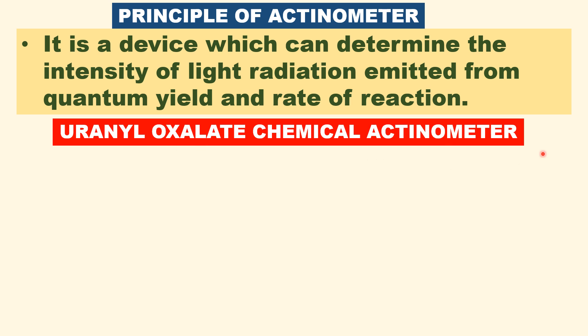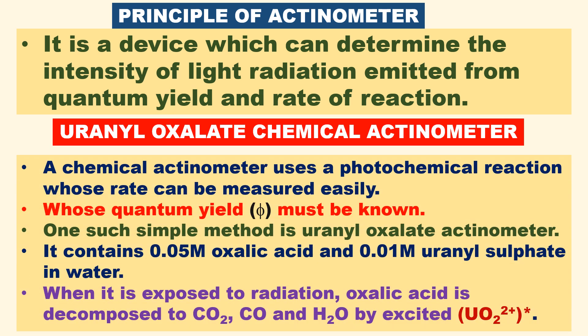Uranyl oxalate chemical actinometer uses a photochemical reaction whose rate can be measured readily. The quantum yield must be known. One such simple method is the uranyl chemical actinometer. It contains, in the cell, 0.05 molar oxalic acid and 0.01 molar uranyl sulfate in water.